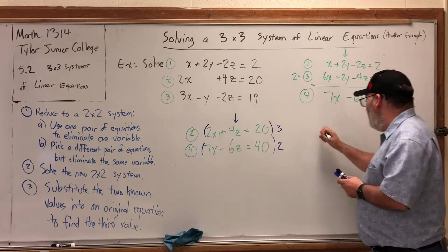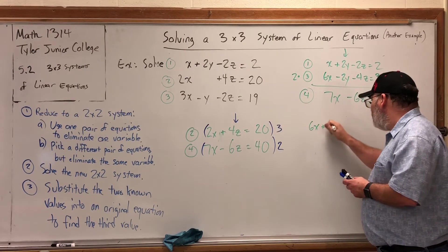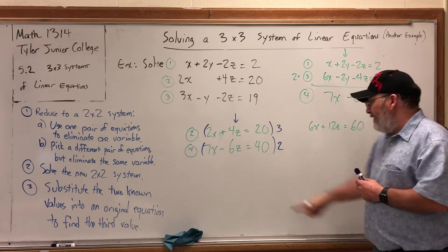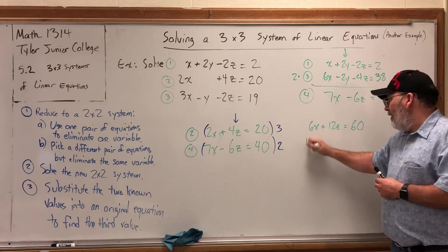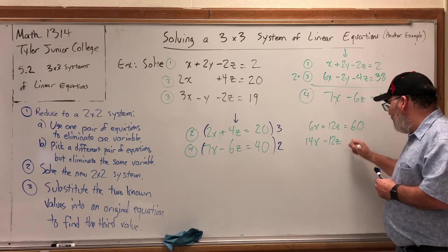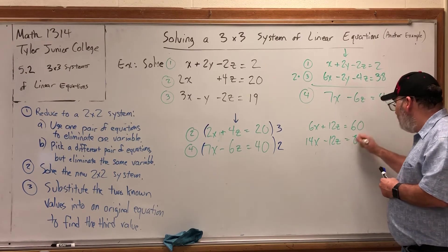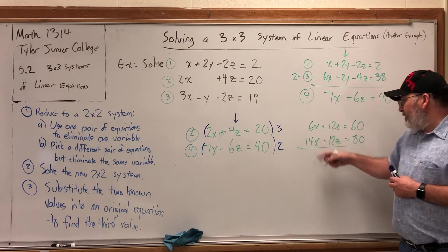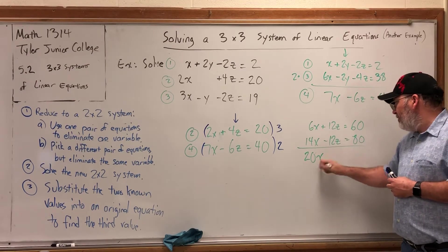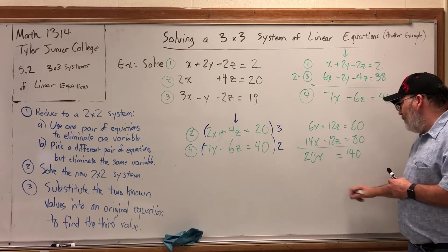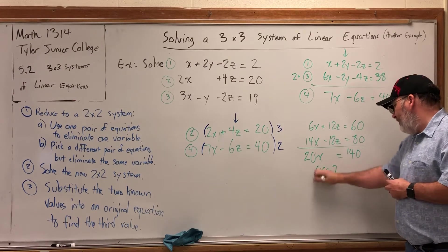If I triple this equation, I will get 6x plus 12z is equal to 60. If I double this equation, I'll get 14x minus 12z, there's my opposite pair, equals 80. And if I add these two new equations, 6x and 14x is 20x. The z's cancel. 60 plus 80 is 140. And if I divide both sides by 20, I get x equals 7.